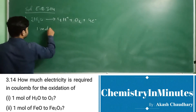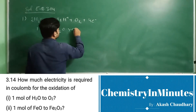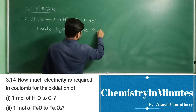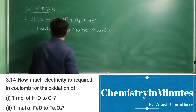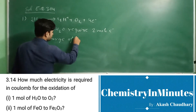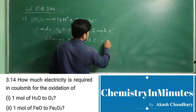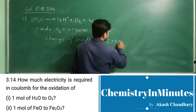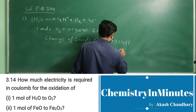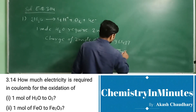Therefore, 1 mole of H₂O₂ requires 2 moles of electrons. The charge of 2 moles of electrons equals 2 × 96487, which is 192974 Coulombs.